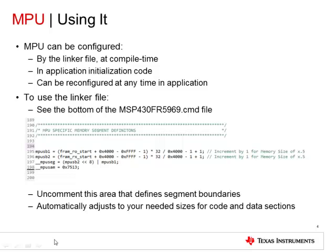There are different methods to configure access management settings using the MPU. The most secure way is by using the linker command file, which pre-configures the settings at compile time and then writes them to the registers prior to the execution of C startup. Alternatively, the MPU can be configured at the start of application code and then reconfigured as needed during code execution.